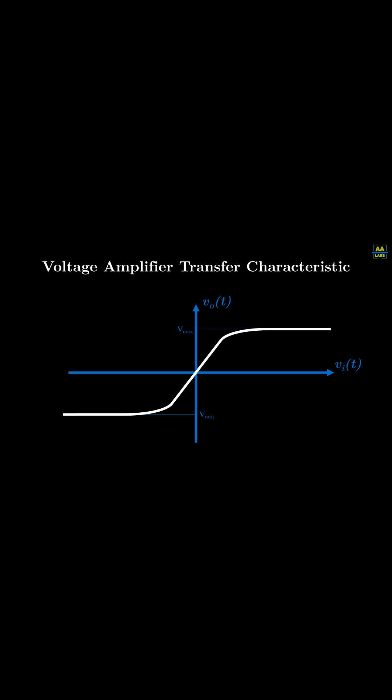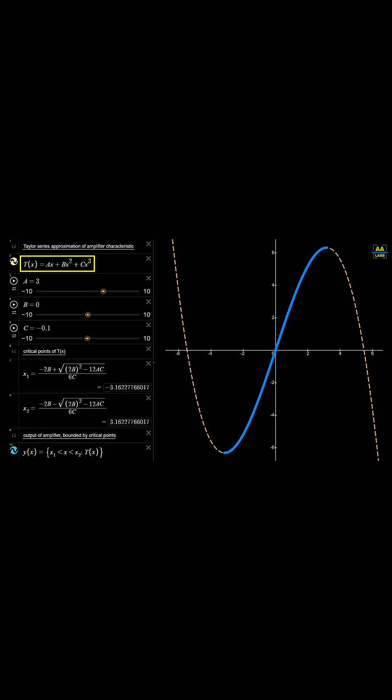This graph depicts how input signals on the horizontal axis get mapped to output signals on the vertical axis. Now, we can approximate this curve by a third-order Taylor series.